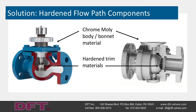Solution: hardened flow path components. Globe-style, ball-style, and Venturi-style control valves are all present in slurry applications. All three styles use hardened materials such as chromoly, stellite, or ceramic trim configurations to combat the erosive effect of slurries. Globe-style and ball-style control valves also use hardened body and bonnet materials such as chromoly to reduce the effects of slurry on the valve body. Using hardened body and bonnet materials can be very expensive. These hardened materials will extend the useful life of the valve, but eventually the body will wear out and have to be replaced.